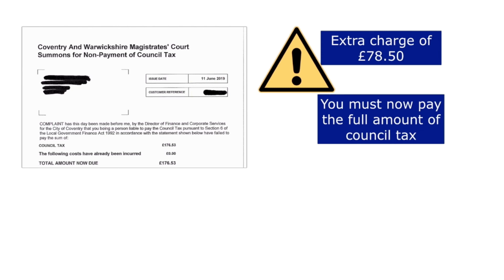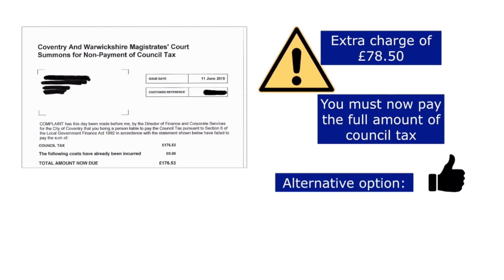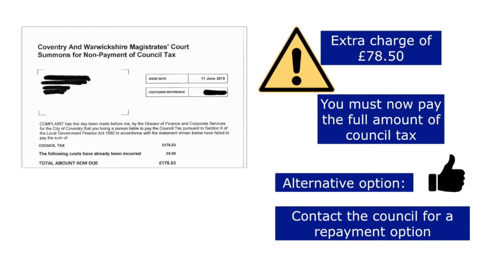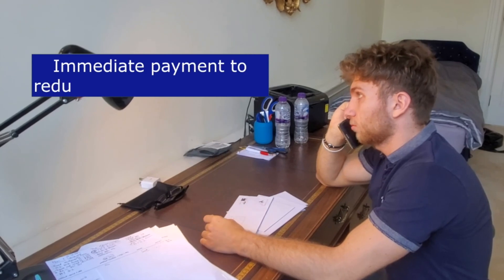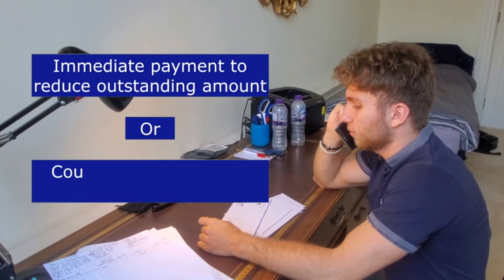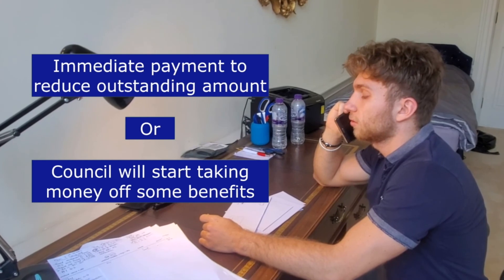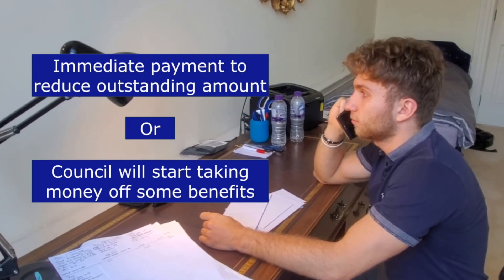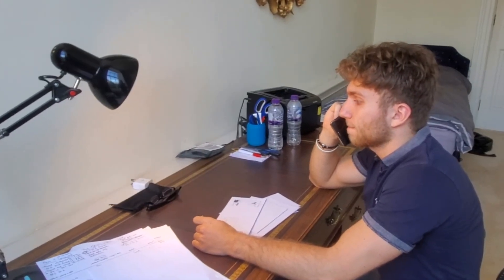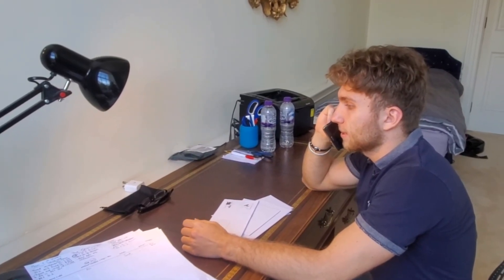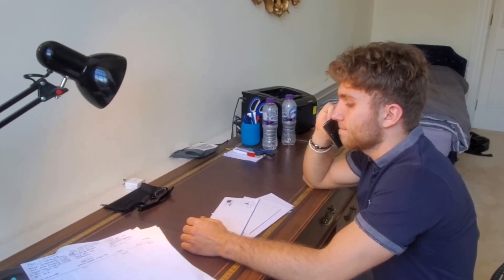If you are unable to make the full payment, there is an alternative option — you can contact the council to discuss a repayment plan. If you are going to do this, you may be asked questions such as who your employer is, your earnings, your workplace address, and the information of others who are liable for the bill. You may be asked to make an immediate payment to reduce the outstanding amount, or the council may start taking money directly from some benefits, for example from universal credit. This option may prevent further actions being taken by the council as you will have a plan to pay off the council tax debt, but this is not guaranteed.